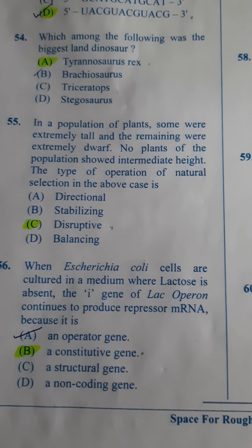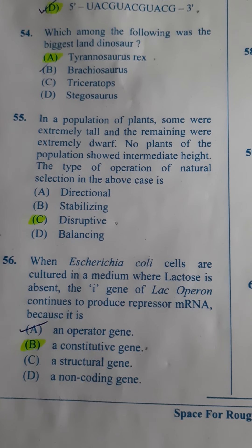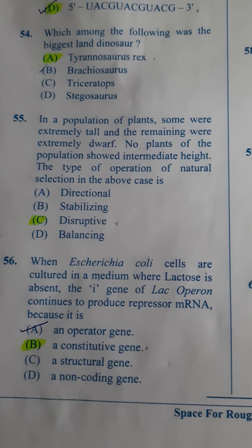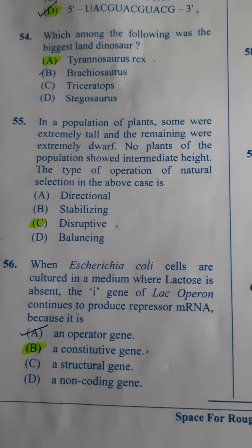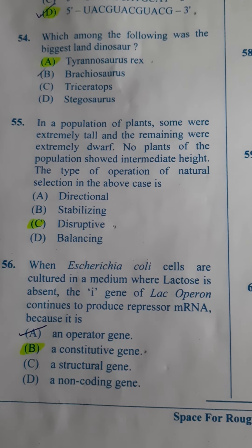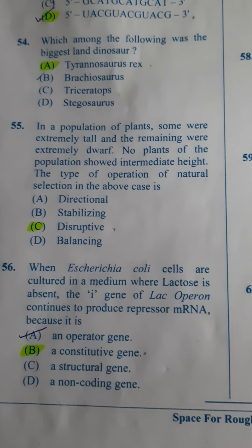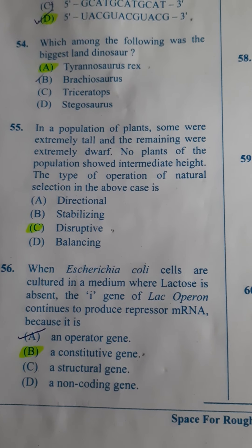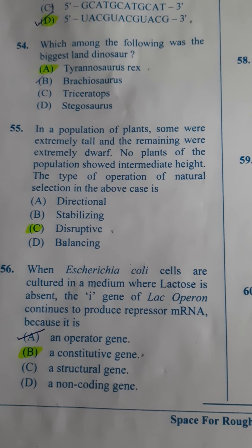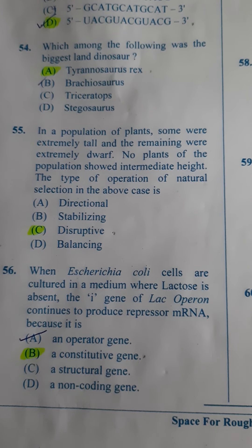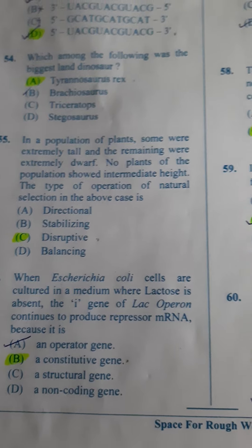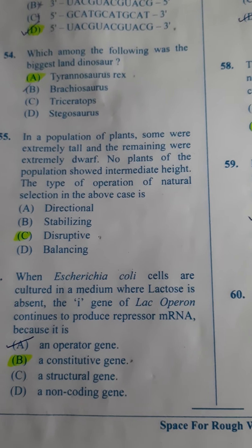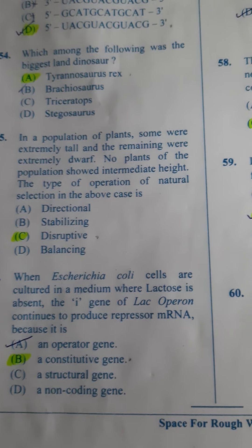Next: When Escherichia coli cells are cultured in a medium where lactose is absent, the regulator gene of the lac operon continues to produce repressor mRNA because it is — it's called a constitutive gene because it will always be on. Only when there is lactose will the operon be switched on. This type of gene is called a constitutive gene. So the answer is B.